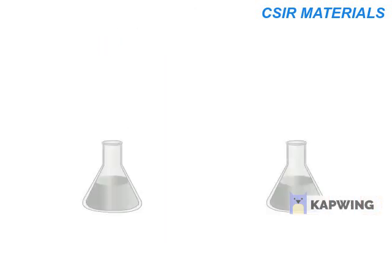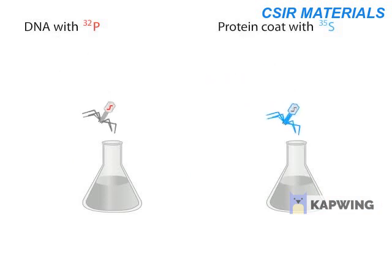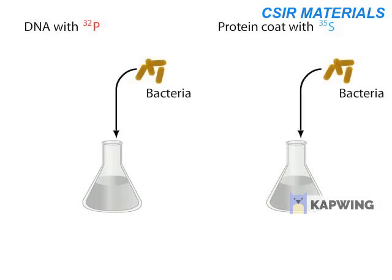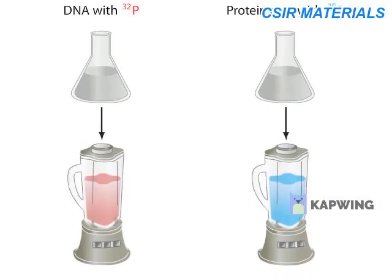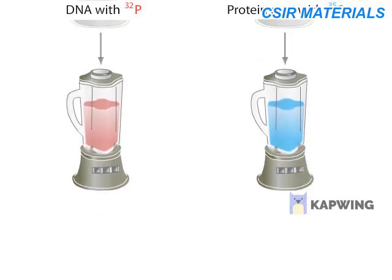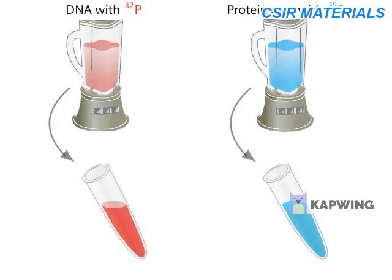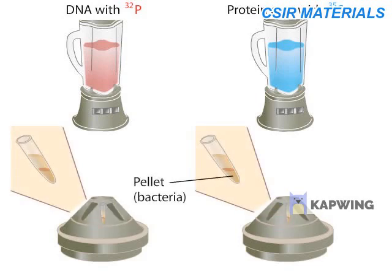After growing the virus in the presence of either P32 or S35, the two radioactive viral samples were added along with the host bacteria to fresh culture medium. The viruses were given enough time to infect the bacteria, after which the culture medium was agitated in a blender to detach the viruses from the bacterial cells. Samples were then placed in tubes and centrifuged to force the bacterial cells to the bottom of the tube, forming a pellet. The supernatant fluid contains the viruses.